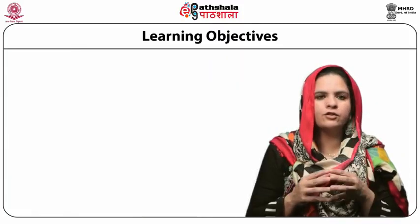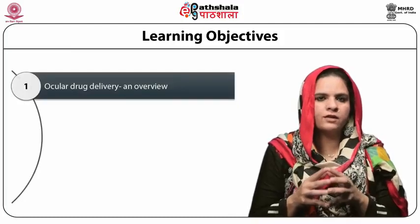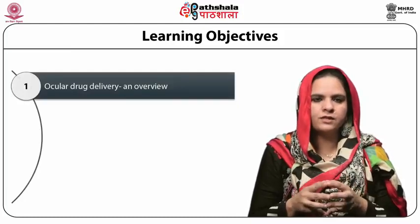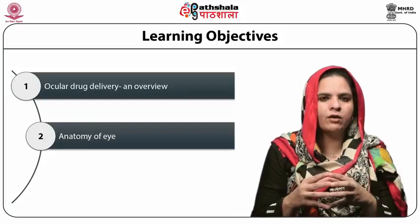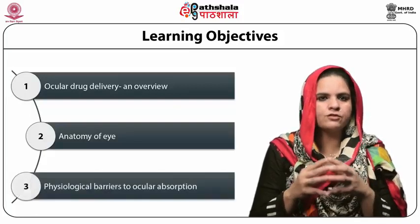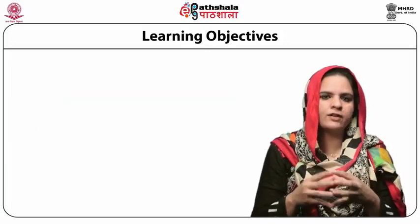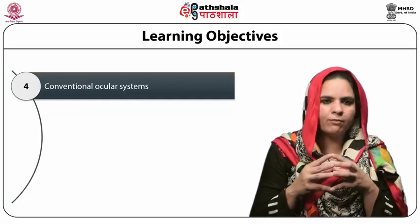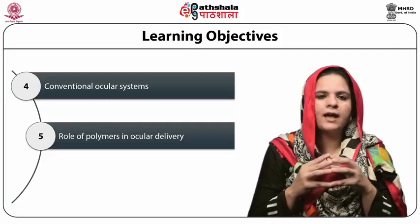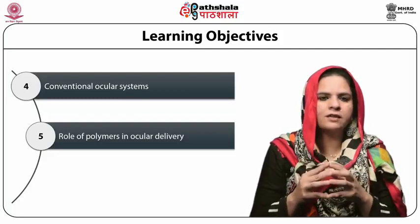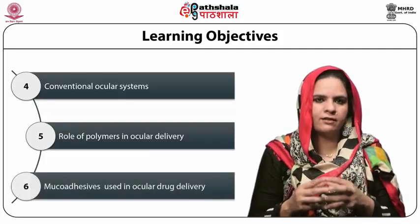At the end of this module, we should be able to understand an overview of ocular drug delivery and its approaches. We will also understand the anatomy of the eye, deliberate upon the physiological barriers to ocular absorption, discuss existing conventional ocular systems, the role of polymers in ocular drug delivery, and special points regarding mucoadhesives used in ocular drug delivery.